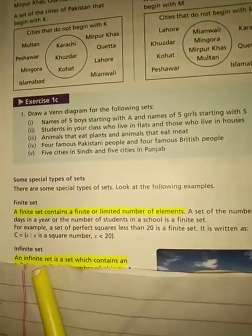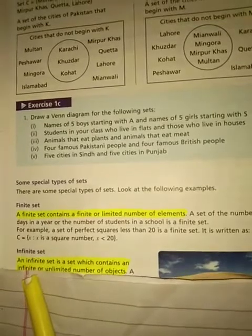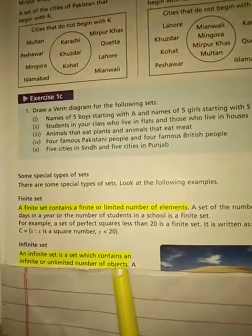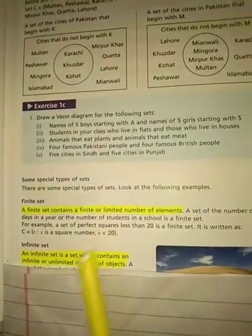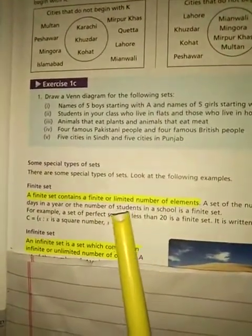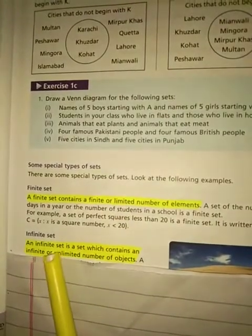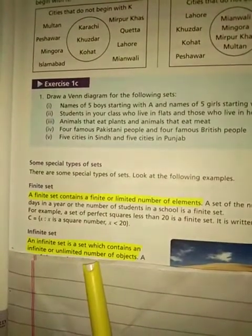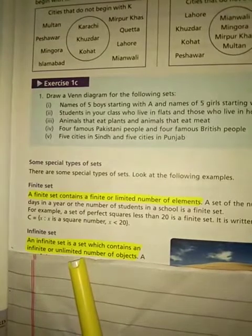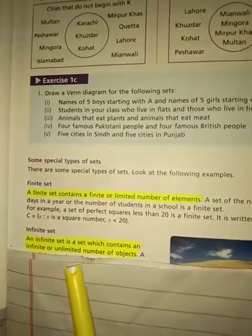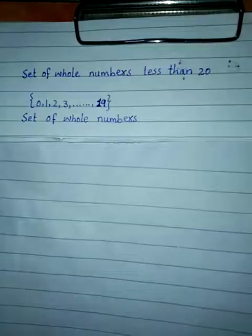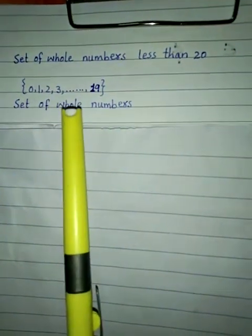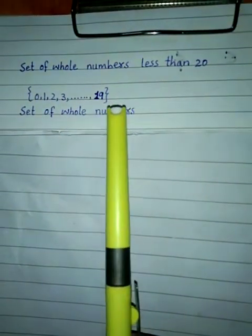Next type: infinite set۔ An infinite set is a set which contains an infinite or unlimited number of objects۔ یہ finite set کا opposite ہے — finite set میں elements limited ہوتے ہیں، لیکن infinite set میں elements unlimited ہوتے ہیں۔ اس کا last element کیا ہے، وہ ہمیں معلوم نہیں ہوتا۔